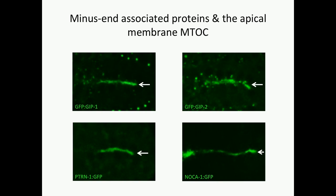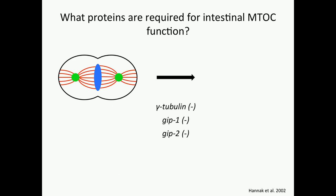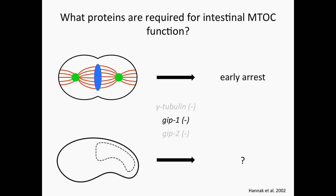Given these localization data, we're really interested in understanding first which of the proteins are actually required for establishing and maintaining these non-centrosomal MTOCs. To do this, we first focused on one of the gamma-TuSC proteins, GIP1. The problem we face with any of these is that they're required for divisions, and so conventional knockouts lead to early embryonic arrest, which prevents us from ever looking at later developing tissues for roles for these proteins.